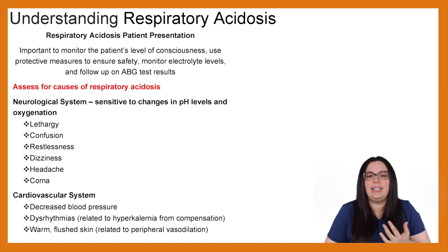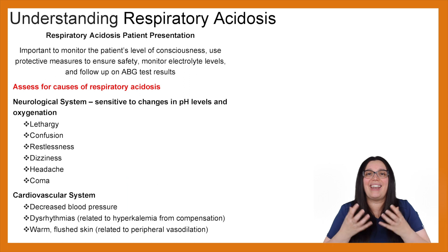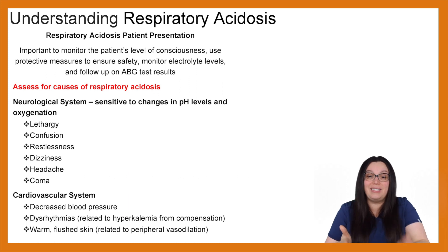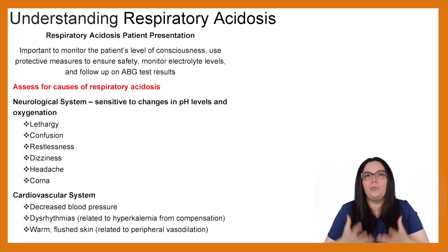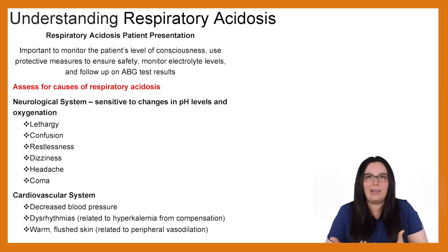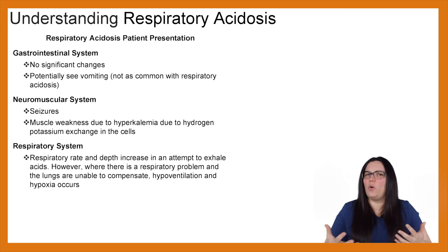Cardiovascular-wise, you're going to have a decrease in blood pressure and dysrhythmias related to hyperkalemia from compensation. Potassium plays a huge role — when there's a buildup of hydrogen ions, the body pushes those hydrogen ions inside the cells. But potassium and hydrogen ions have an inverse relationship, so if hydrogen ions are going into the cell, potassium has to come out. You'll have a higher serum potassium in an acidotic state, causing dysrhythmias due to hyperkalemia, as well as warm, flushed skin related to peripheral vasodilation.